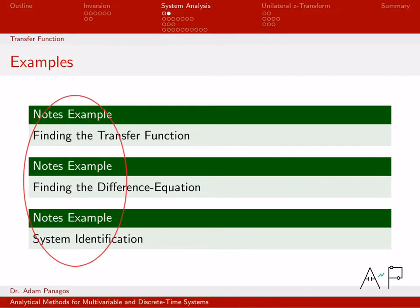These are the three examples we'll be working. In this video, we're going to work this first example. I'm going to give you a difference equation, which is a time domain description of a discrete time system, and from that difference equation, we're going to find the transfer function. So we'll compute the transfer function from the difference equation representation.